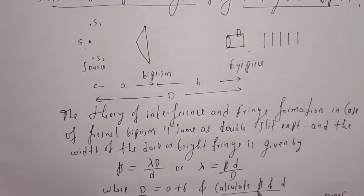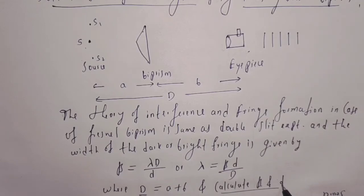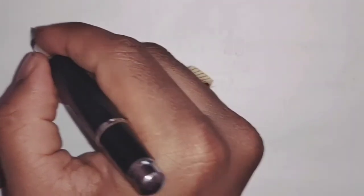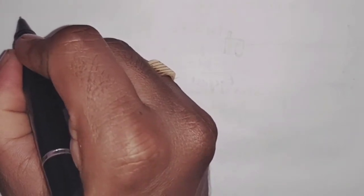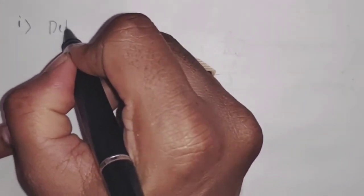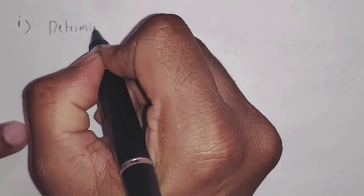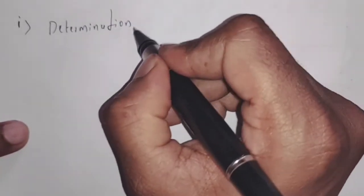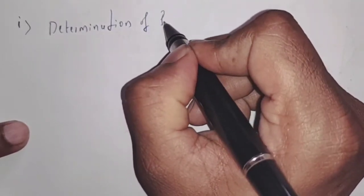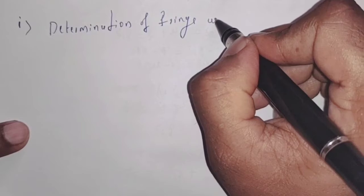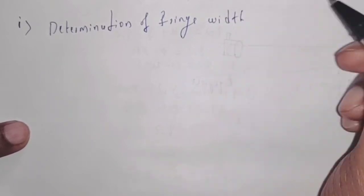Now let us see how to calculate beta and small d. Let us determine the fringe width — that is, determination of fringe width.